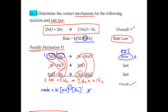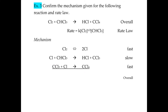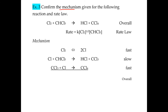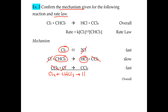Now we're on Chapter 12, page 10 of the AP Chemistry packet, continuing with mechanisms. Here we confirm that the given mechanism is correct for the given rate law. First we look at intermediates: there are two HCl molecules that cancel, and the CCl₃ intermediate cancels as well. Rewriting, you get Cl₂ and CHCl₃ on the reactant side yielding HCl and CCl₄ — which matches the overall reaction, so that checks out.